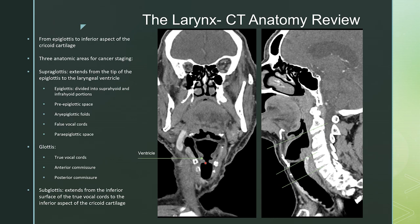The epiglottis is part of that supraglottic space, as is the pre-epiglottic space, which is mostly fat, the aryepiglottic folds, which extend on either side of the epiglottis, the false vocal cords, and the paraepiglottic space.